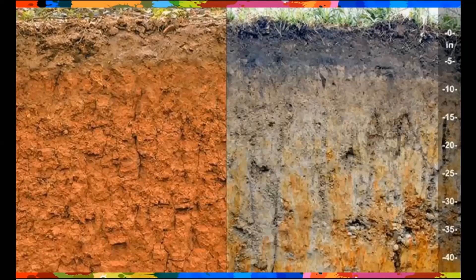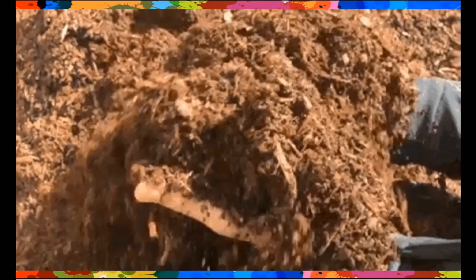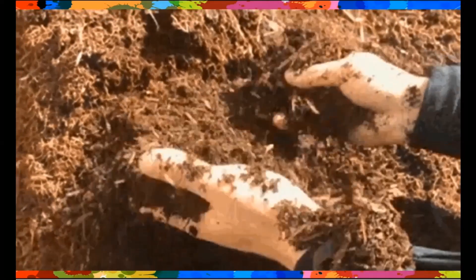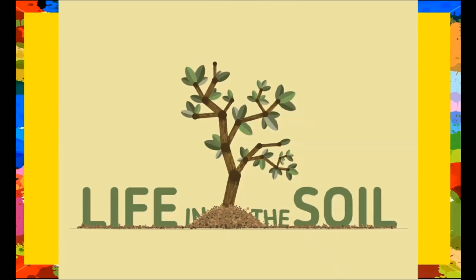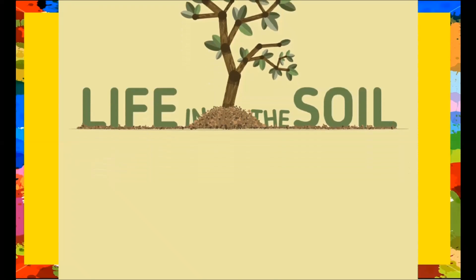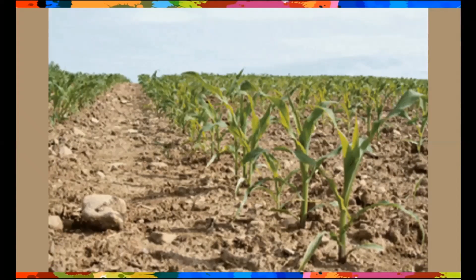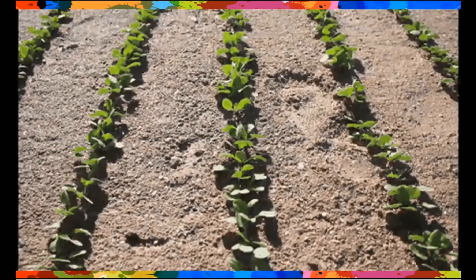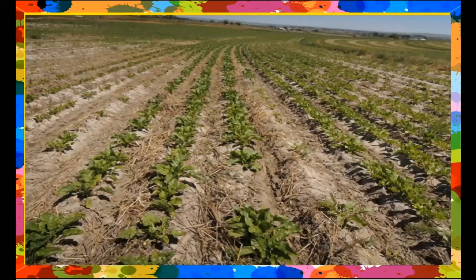Each soil type differs in color, texture, odor, and its ability to hold water. The presence of different kinds of vegetative plants in a place is evidence of good quality soil in the area or locality. Sometimes a combination of soil is observed in some areas of the country.